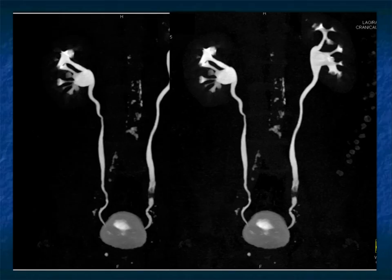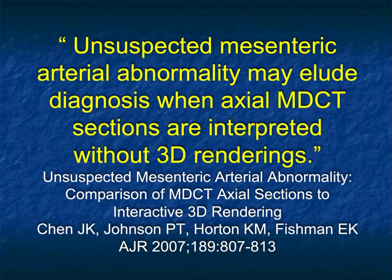Here it is very nicely on the MIP again. You can see the calyces, the defect, and the dilated left ureter. Very important.